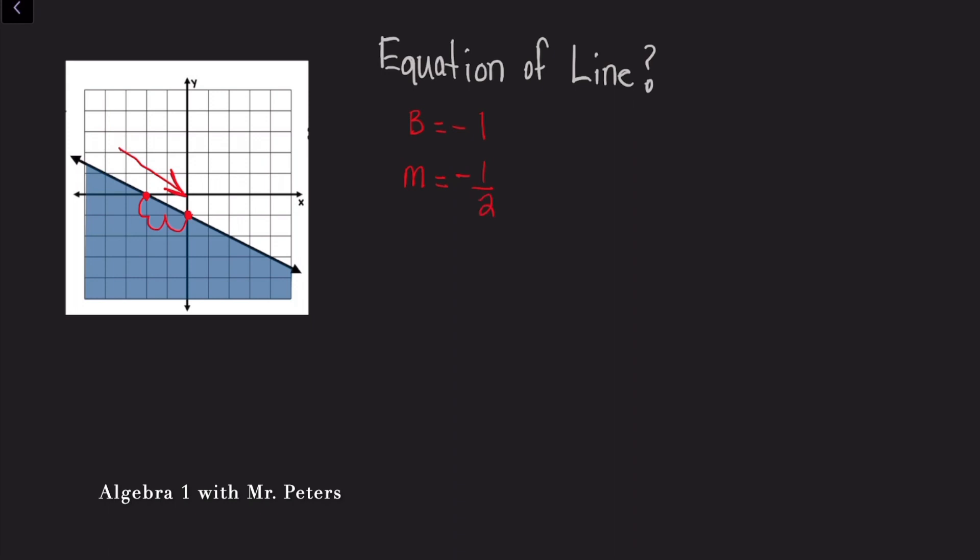Now as we go ahead and put this together, what we're going to have is y is less than or equal to negative 1 half x minus 1. So when we look at this, just remember they shaded under this line. So because they shaded under this line, we're going to have the less than or equal to sign. If they shaded above the line, then we would have had a different inequality sign, which would have been greater than or equal to.